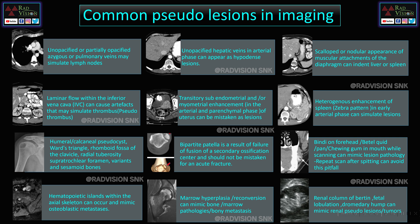We'll try to see some common pseudo lesions in imaging. First, an opacified or partially opacified azygous vein or pulmonary veins can mimic lymph nodes. Opacified hepatic veins can mimic hypodense lesions. A scalloped nodular appearance of the diaphragm can mimic lesions and can even indent liver and spleen. Laminar flow in the inferior vena cava can mimic thrombosis.